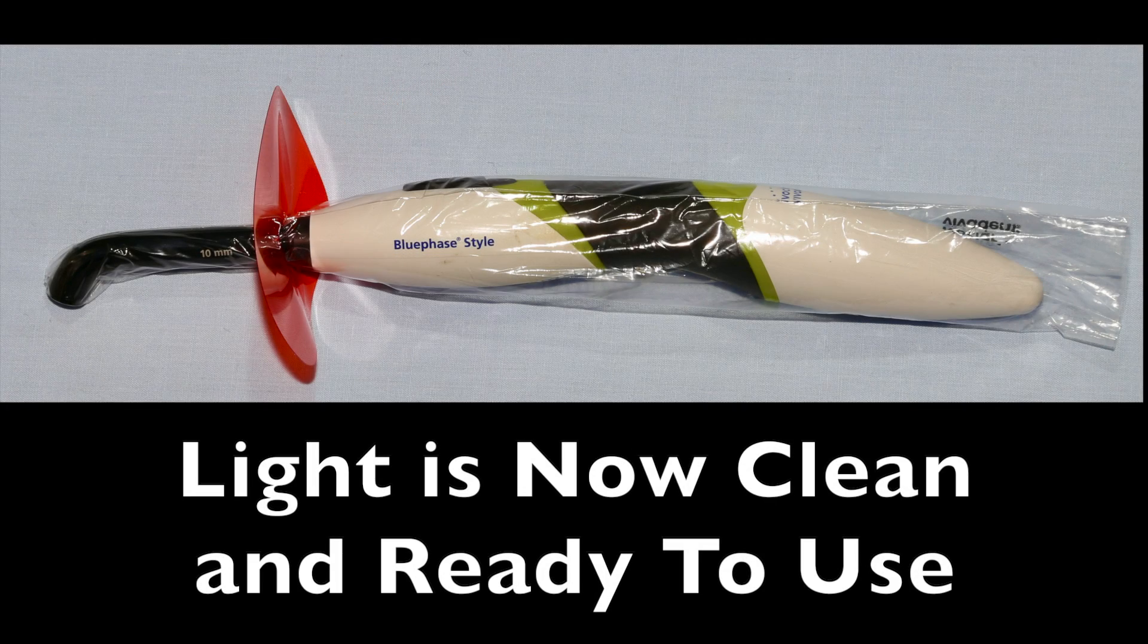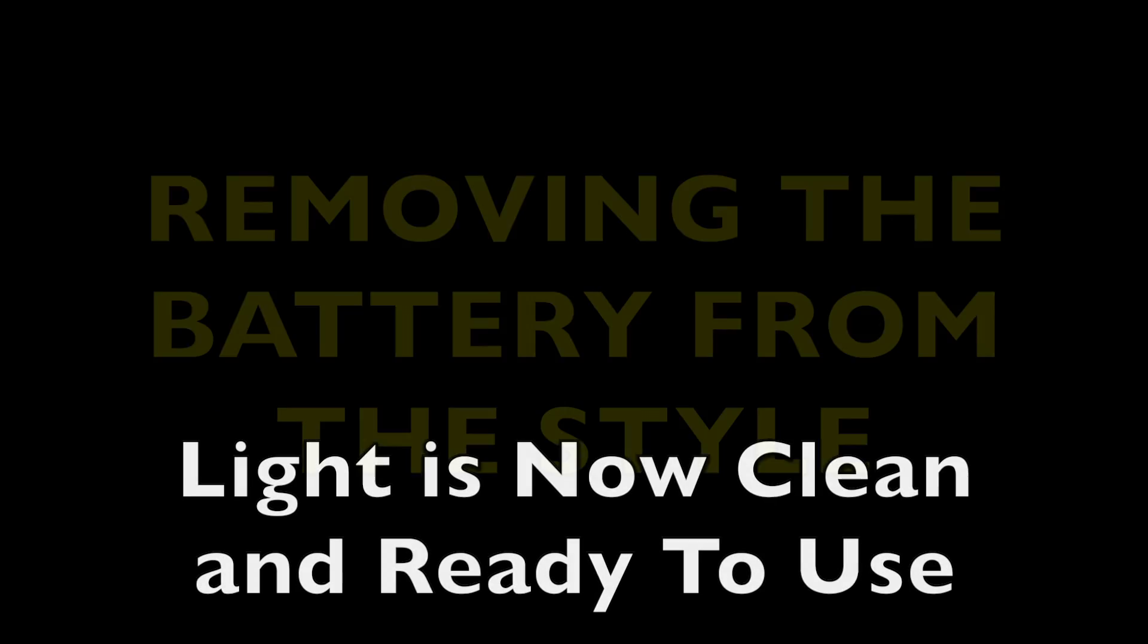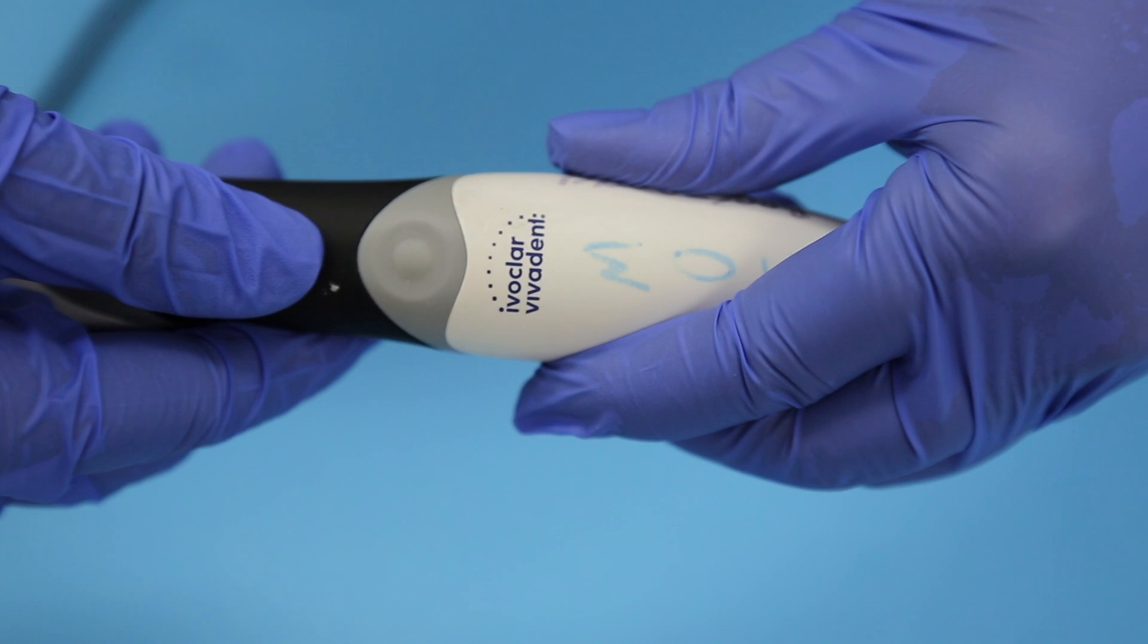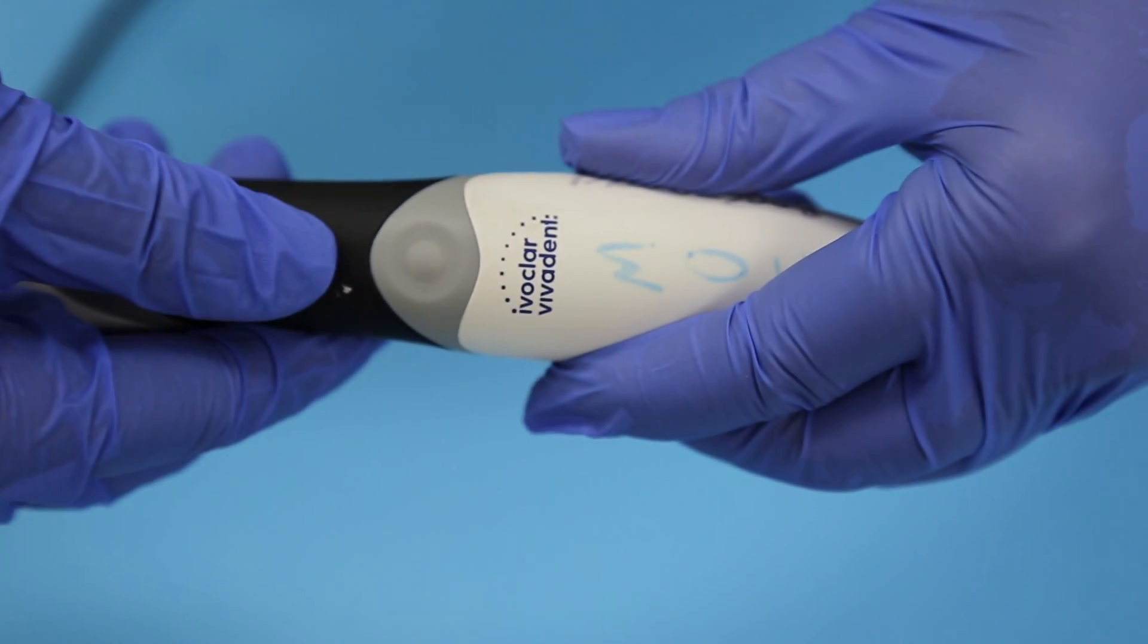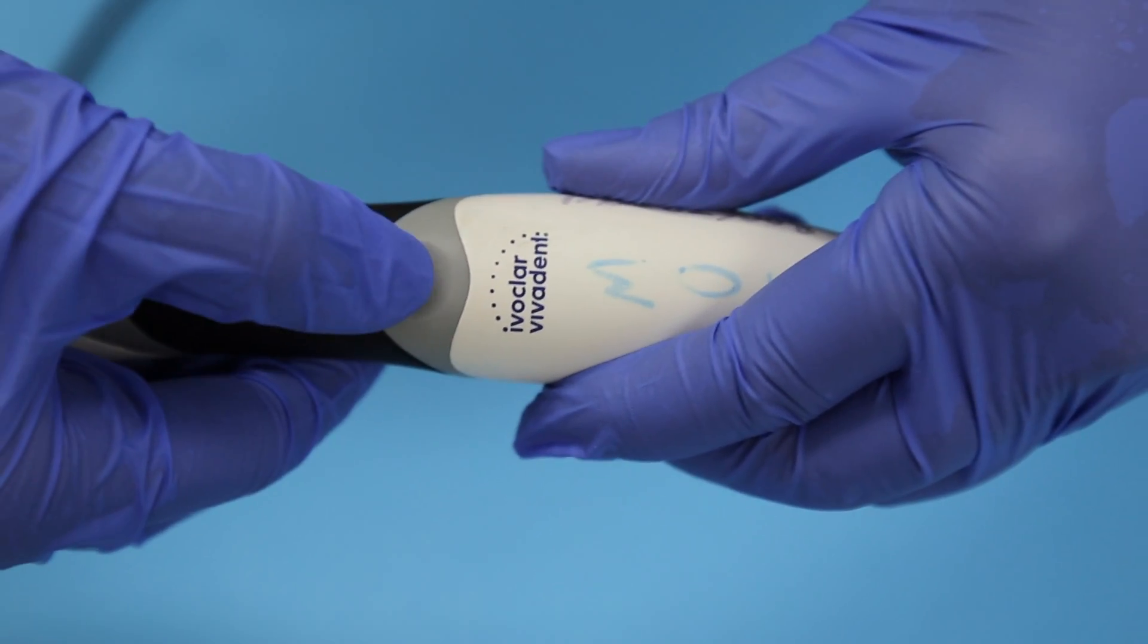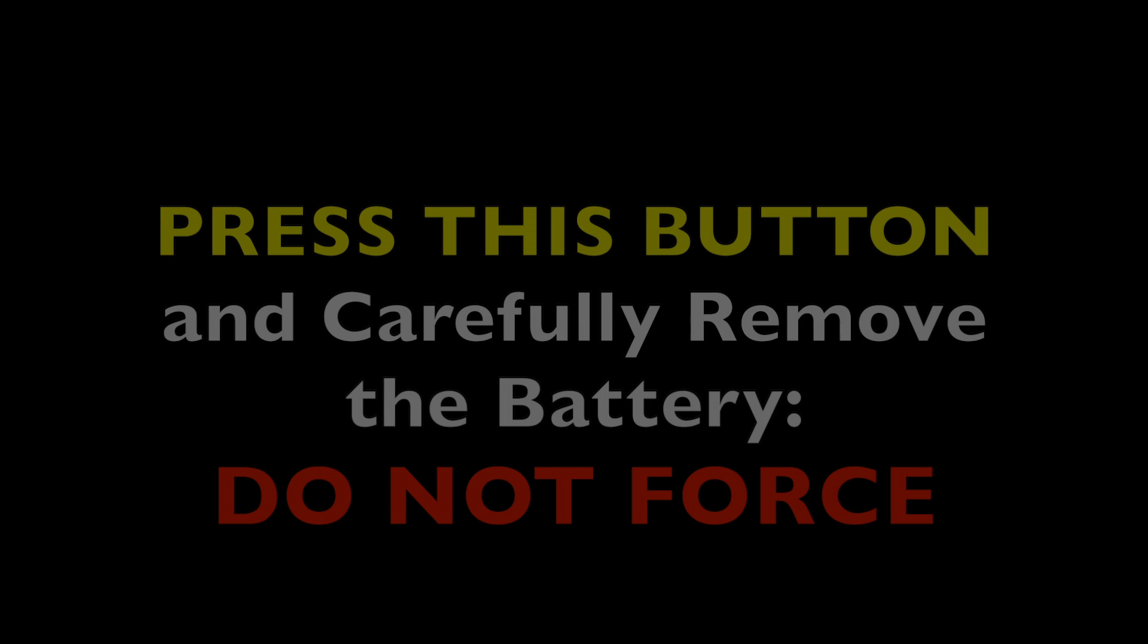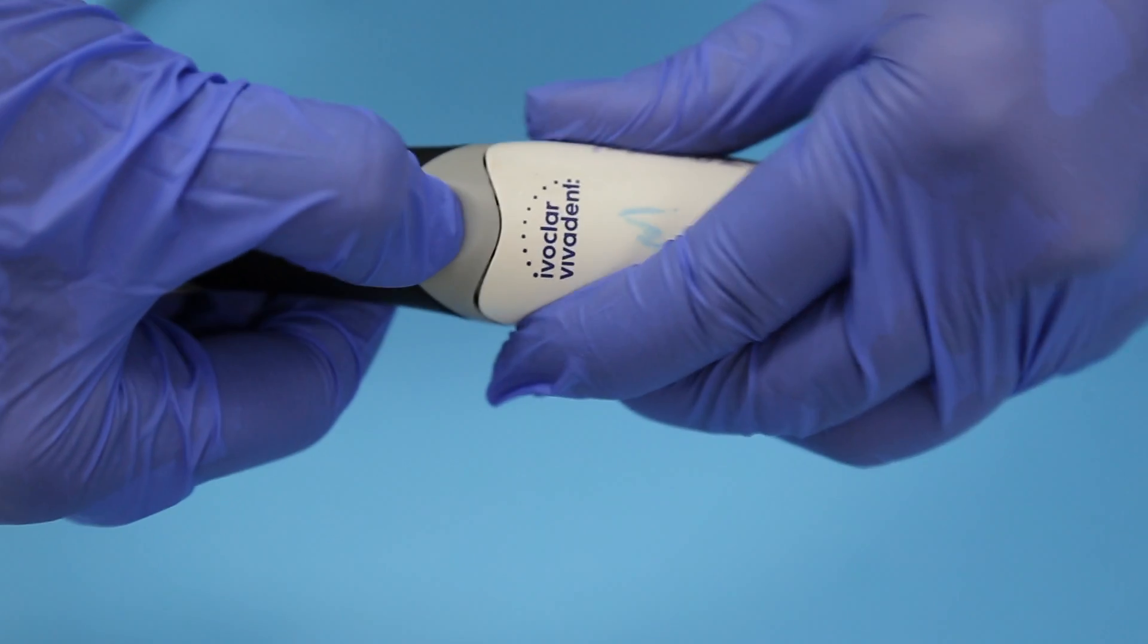So now the light is ready for use. Just some further information on this particular light. If you need to remove the battery, you're going to press this button and then carefully remove the battery. Don't force it. There have been reports of the battery compartment breaking because people have been putting on it too hard.